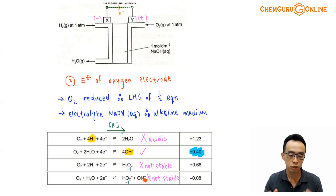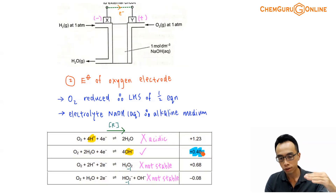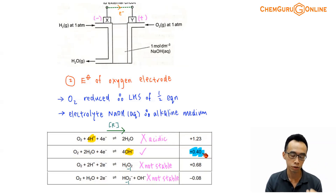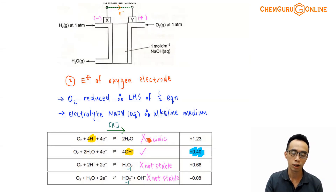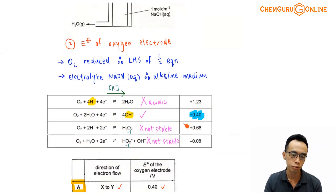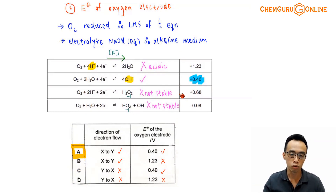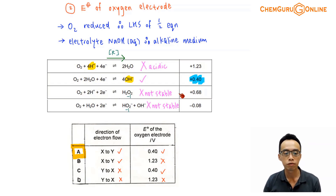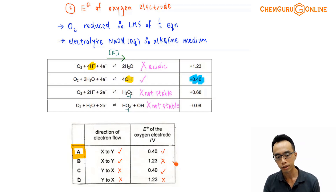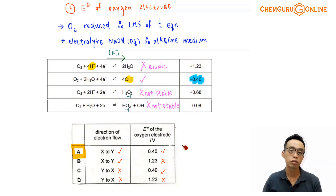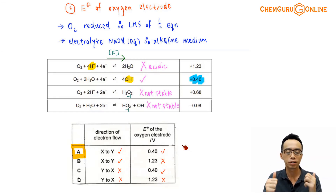So when I consider the reduction of O2, we use the +0.40V half equation for alkaline medium. We have now addressed both parts: electrons flow from X to Y, and the E-value for O2 is 0.40V. Running through options A, B, C, D, the answer to this exercise is option A. If you learned something useful from this video, please give a thumbs up, like and subscribe to my YouTube channel for more weekly video lessons. That's all for now, see you next week.